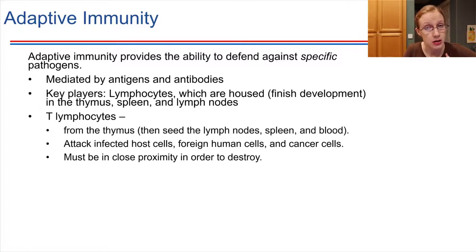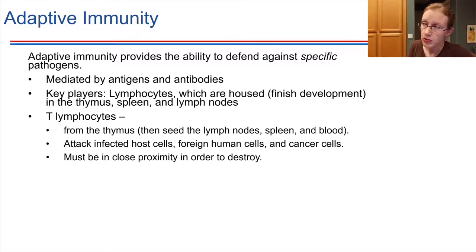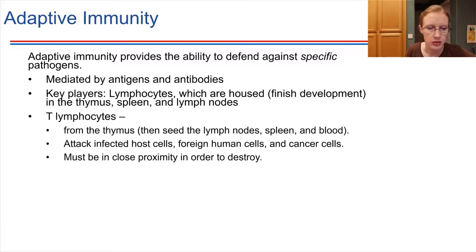In the case of transplants, if you take an organ from one individual and transplant it into another, and the cell types are not closely matched enough, that can trigger the immune system to start attacking the transplanted tissue — that has to do with T lymphocytes recognizing something as foreign. They also do a great job of keeping cancer cells in check and destroying them. A key thing about T lymphocytes is that they have to be really close to their targets — they cannot act at a distance; they have to be right up next to the cell they are going to destroy.